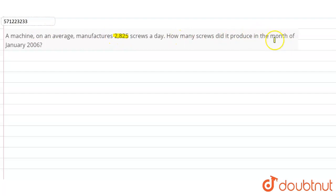So, number of screws in one day is 2,825. In the month of January, we have to find. So, number of days in January is 31 days.